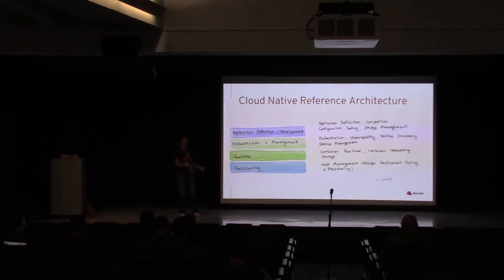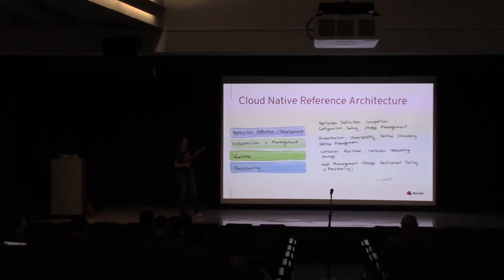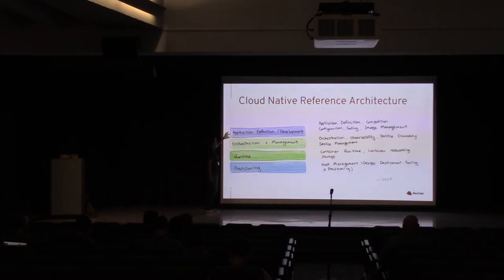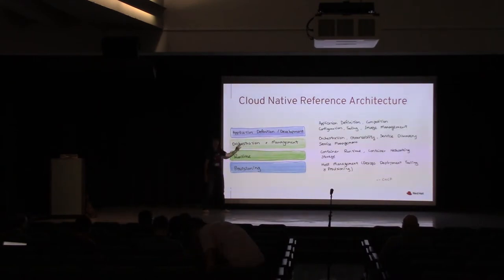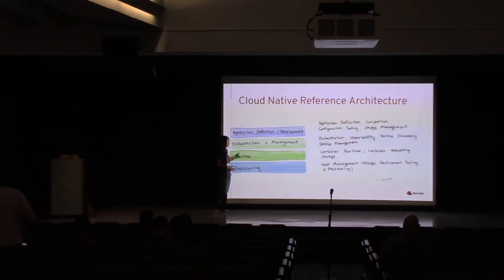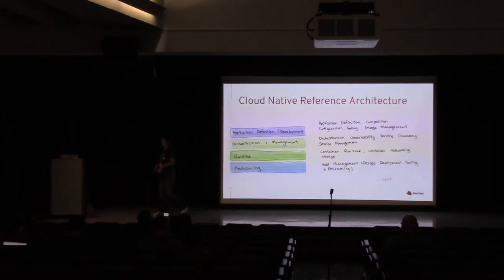This is what the CNCF — the Cloud Native Computing Foundation — defines as what a reference architecture should look like. You can see this is where you do your application development, this is where you orchestrate all your stuff together like container orchestrations, storage, and provisioning. These are the things that define what should be in the architecture. But this is all very vague.